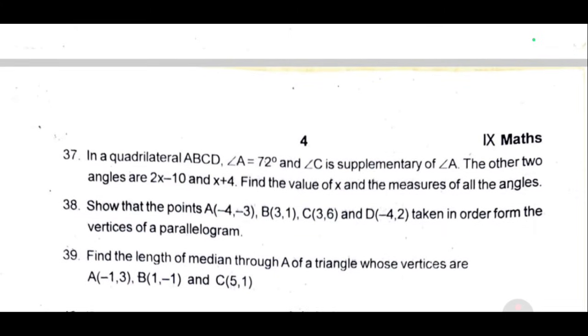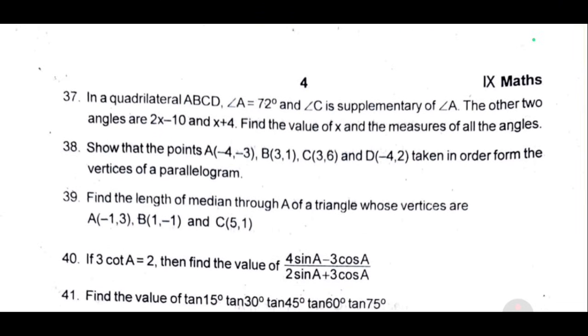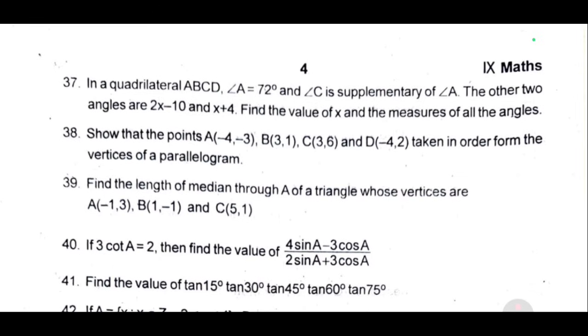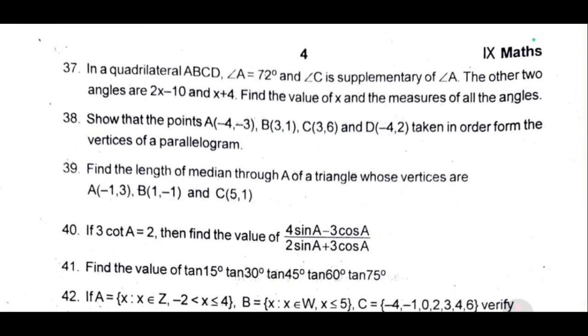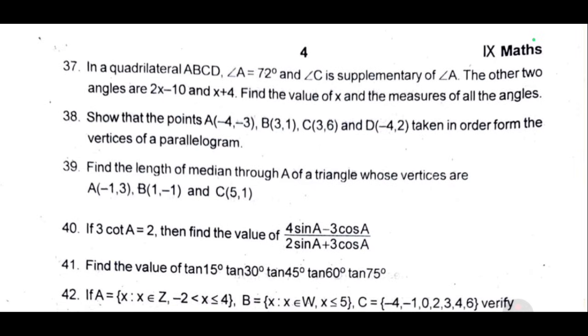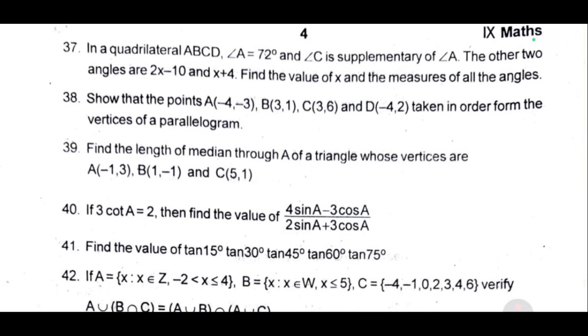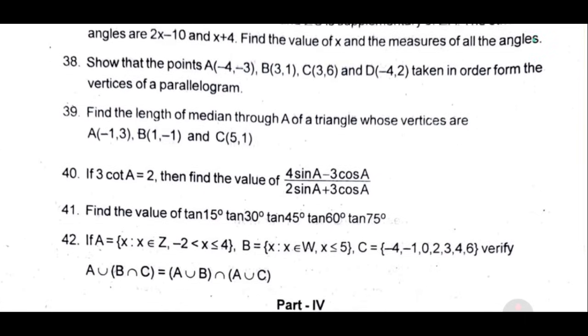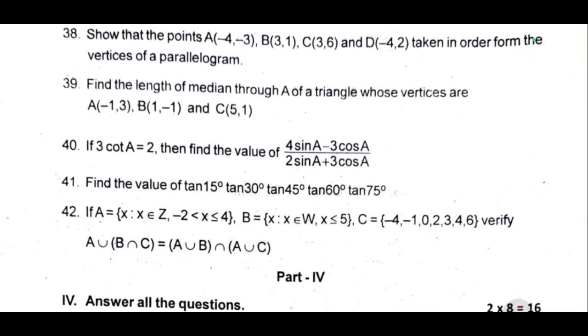39, find the length of median through A of a triangle whose vertices are A minus 1 comma 3, B 1 comma minus 1, C 5 comma 1. 40, if 3 cot A equal to 2, then find the value of 4 sin A minus 3 cos A by 2 sin A plus 3 cos A. 41, find the value of tan 15 degree, tan 30 degree, tan 45 degree, tan 60 degree, tan 75 degree. 42, if A equal to x, x belongs to z, minus 2 less than x less than equal to 4, B equal to, C equal to, verify A union B intersection A union C.